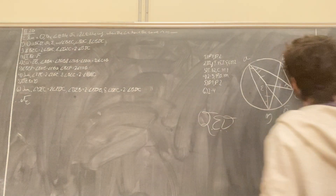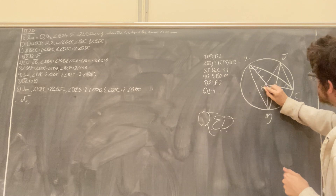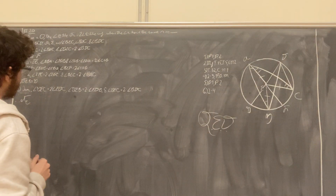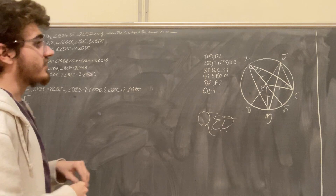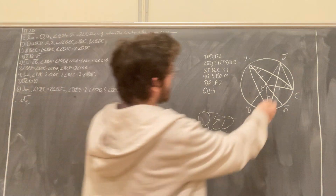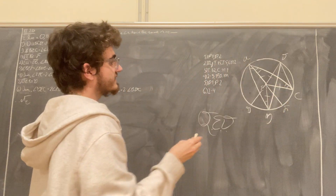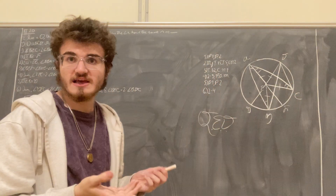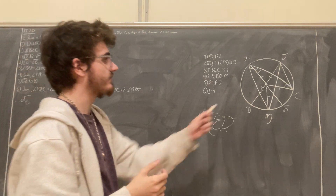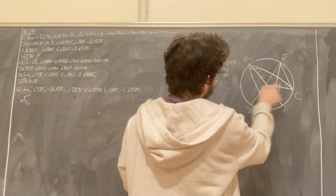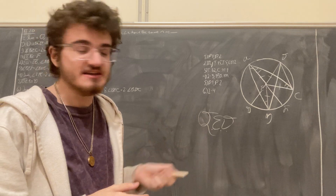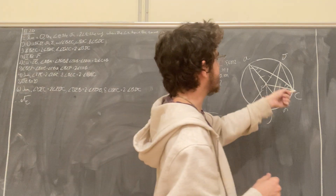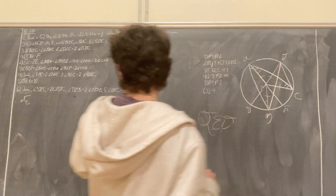Next, if we take the straight line D, E and produce it all the way down to G, we can prove similarly that the angle G, E, C equals double the angle E, D, C. Looking at triangle D, E, C, the sides E, D and E, C are equal radii, so angle E, C, D equals angle E, D, C by proposition 1.5, and their sum is double the angle E, D, C. The angle G, E, C, being an exterior angle to triangle D, E, C by proposition 1.32, also equals angle E, C, D plus angle E, D, C. So angle G, E, C equals double the angle E, D, C.